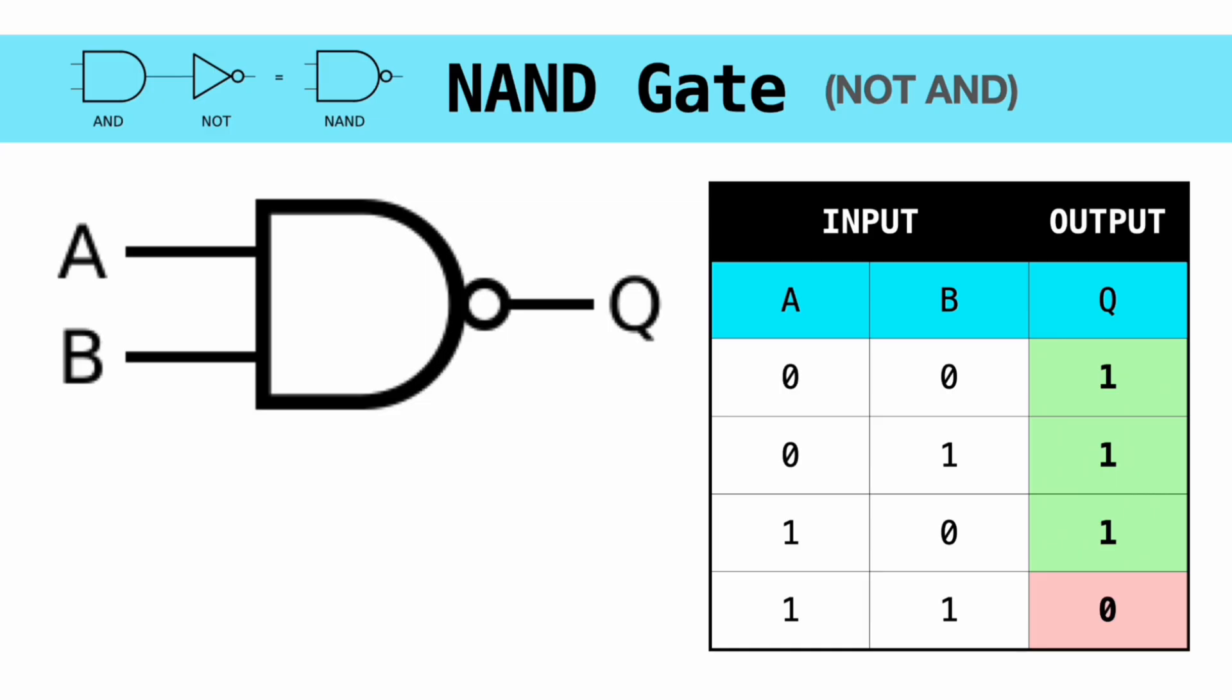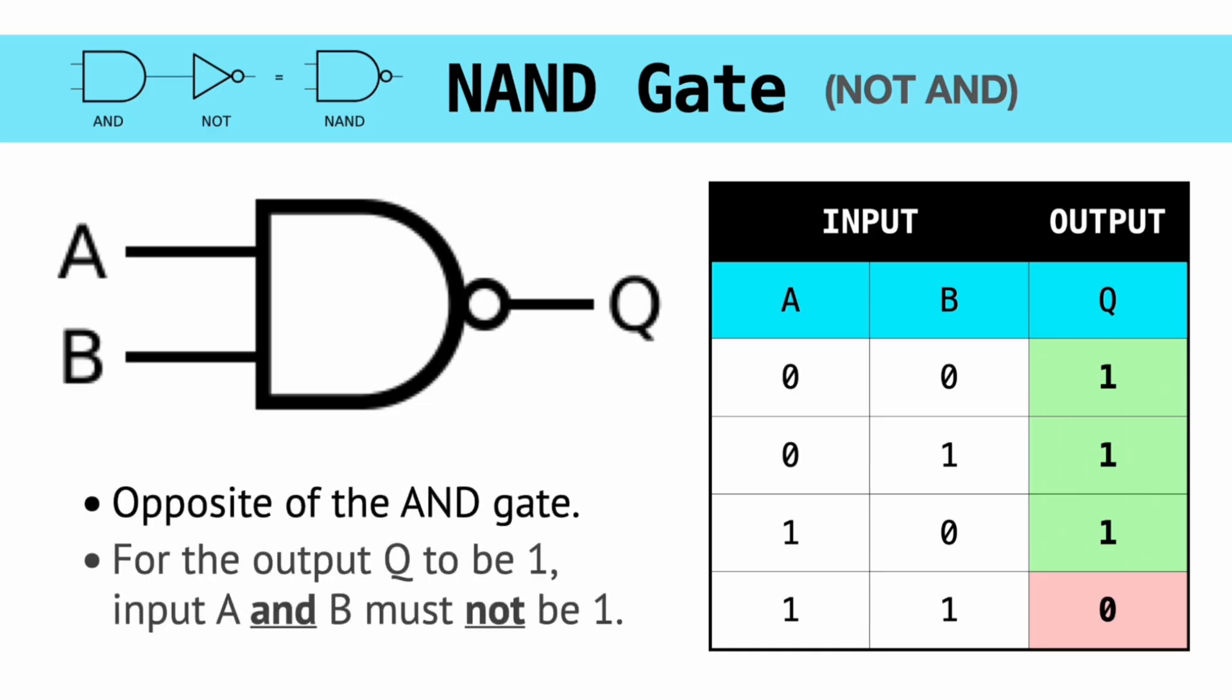With the AND gate, you needed both A AND B to be 1 for the output to be 1. However, with the NAND gate, for the output to be 1, A AND B must NOT be 1. All other combinations are okay.